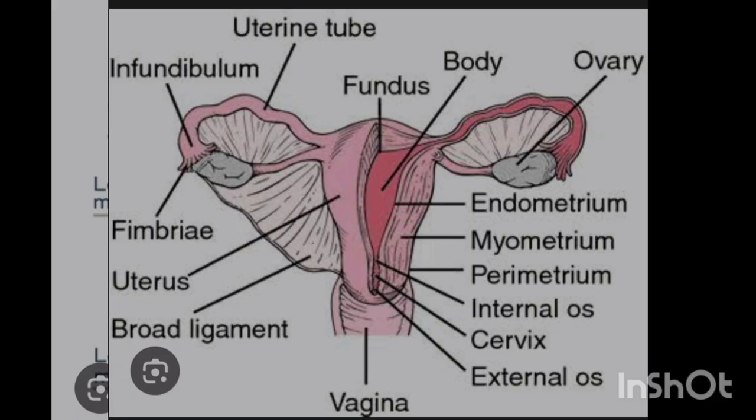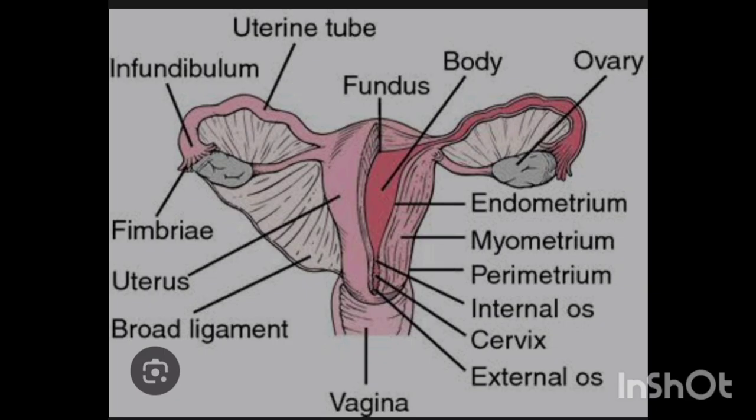Starting with the vagina: the vagina is a muscular tube that extends from the vulva to the external os of the cervix. Then the uterus — the uterus is a pear-shaped organ found between the urinary bladder anteriorly and the rectosigmoid colon posteriorly.